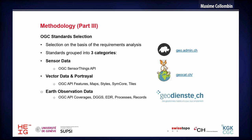Speaking of the three groups of standards: for sensor data, we focused on the OGC SensorThings API, handled by SUPSI. For vector data and portrayal, handled by HEIG-VD, the focus was OGC API Features, Maps, Styles, Symbology Core Modeling, and Tiles. For Earth observation data, the University of Geneva focuses on OGC API Coverages, DGGS for Discrete Global Grid Systems, Environmental Data Retrieval, Processes, and Records.